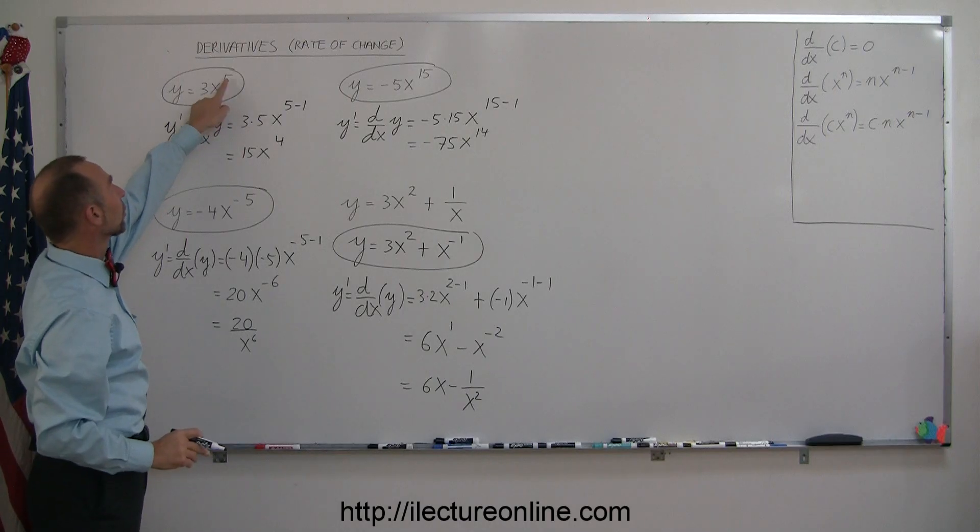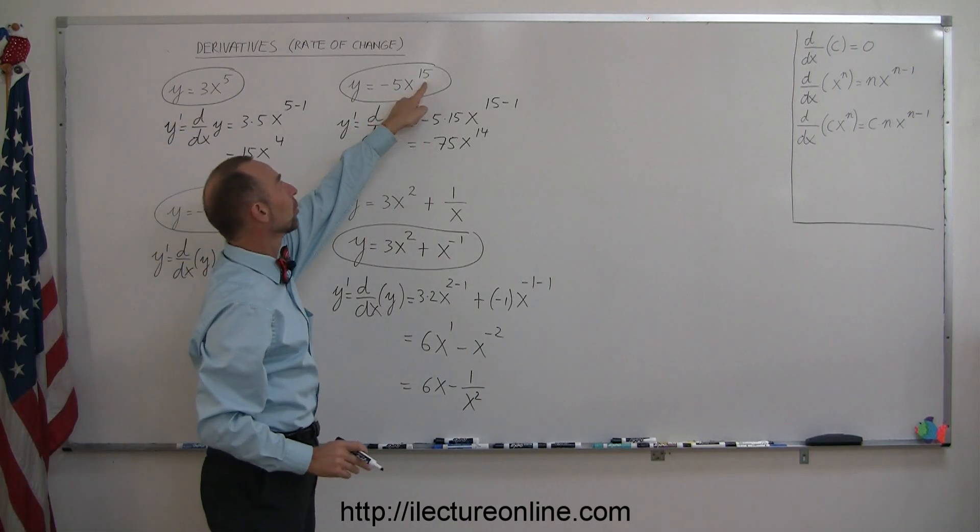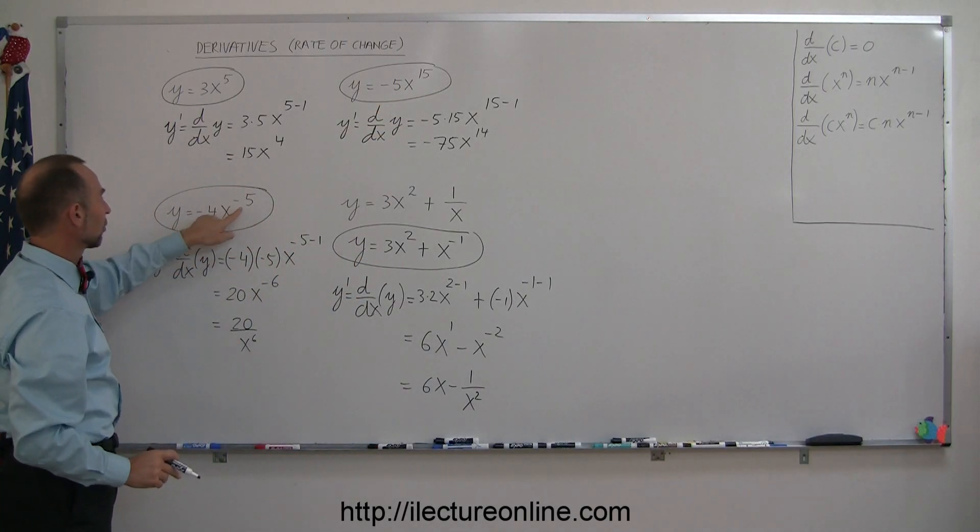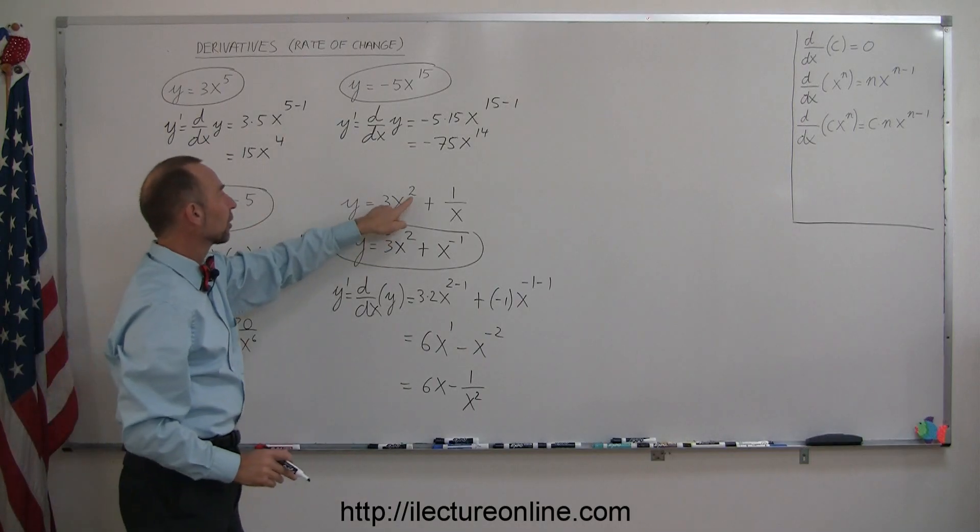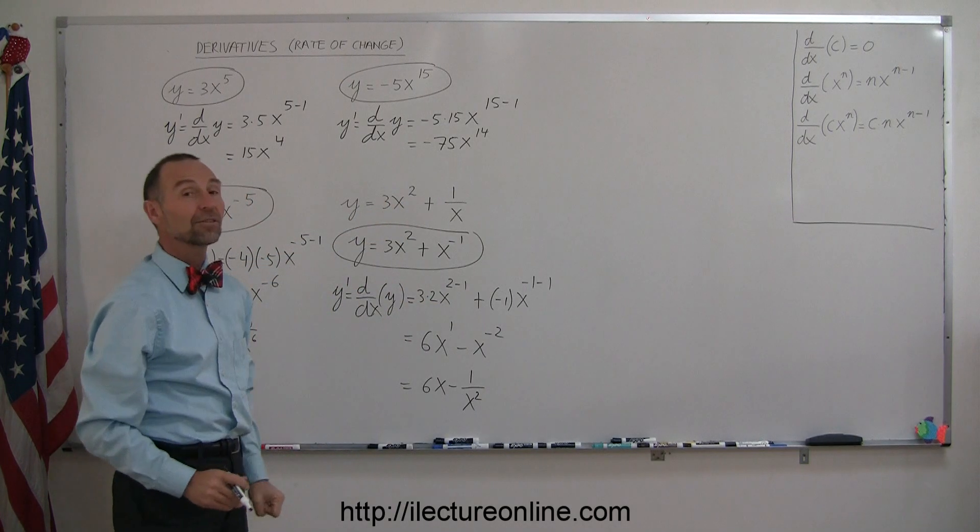And again, for summary, the process for each is: take the exponent, multiply times the constant, and subtract 1 from the exponent. This same process applies to all these examples, and that's how you do these problems.